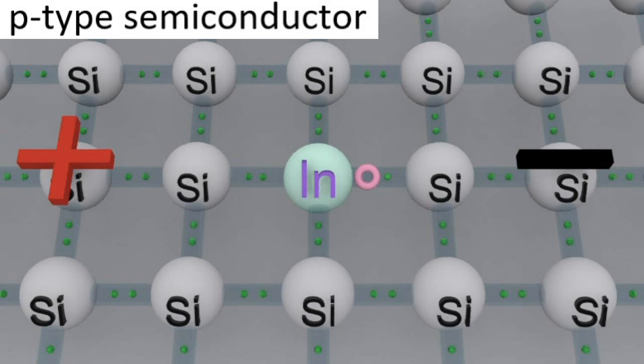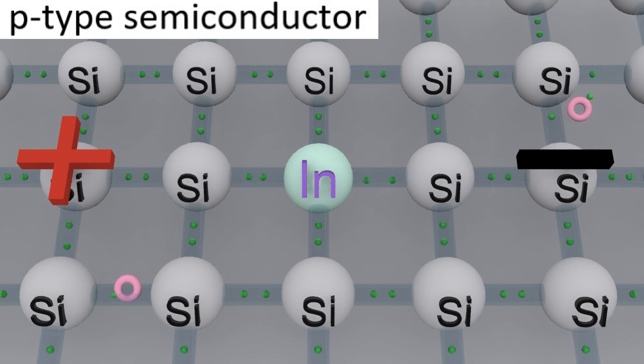Now what happens to that hole is an electron can jump into that hole when a potential difference, a plus and a minus, is applied. And as the electron jumps into the hole, the hole effectively moves. Now this does seem quite strange. This hole again is a lack of an electron, and so electrons can jump into that space.